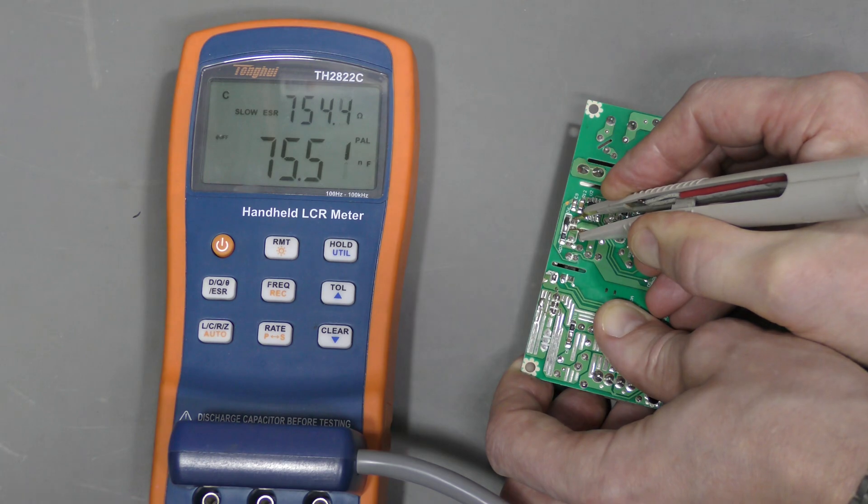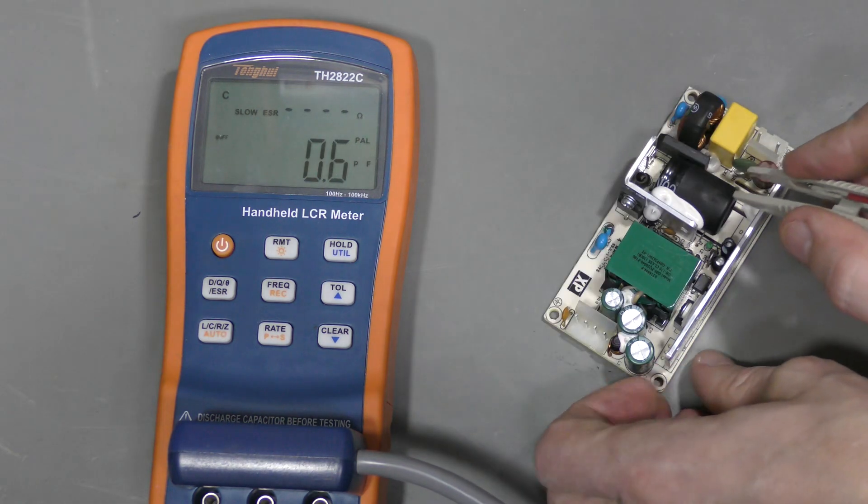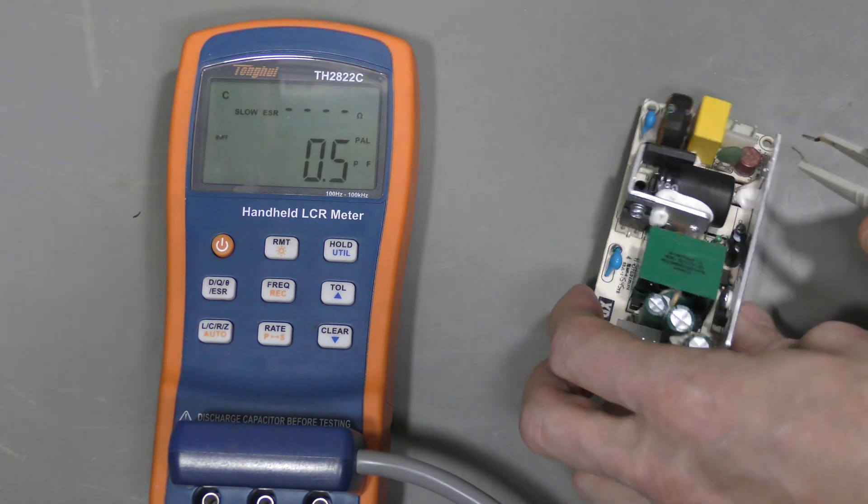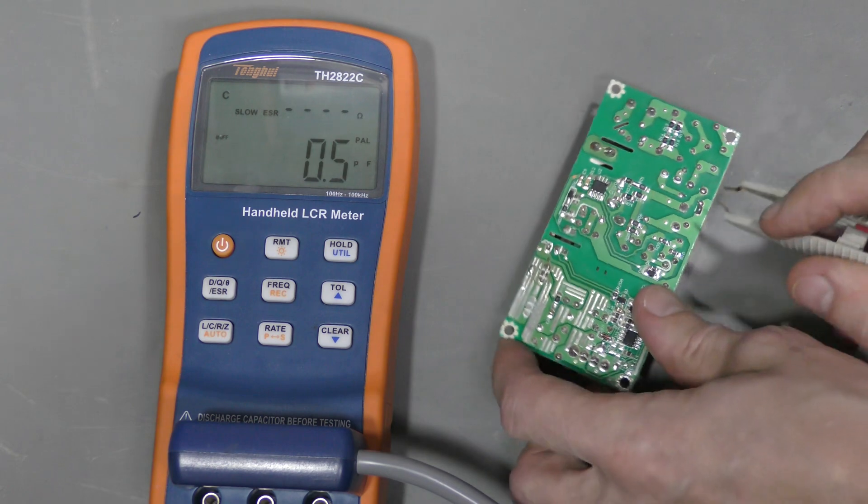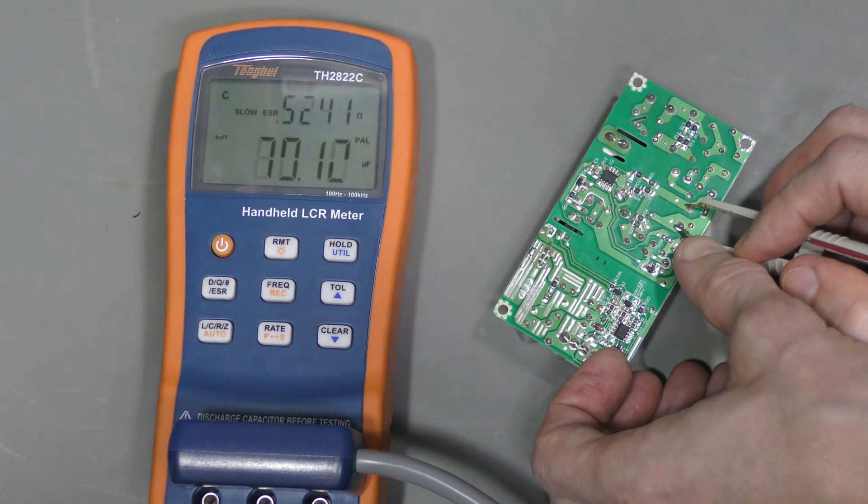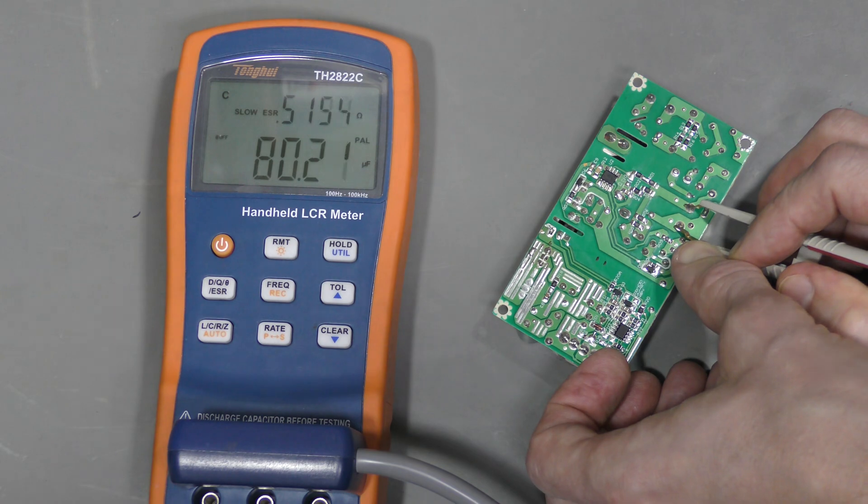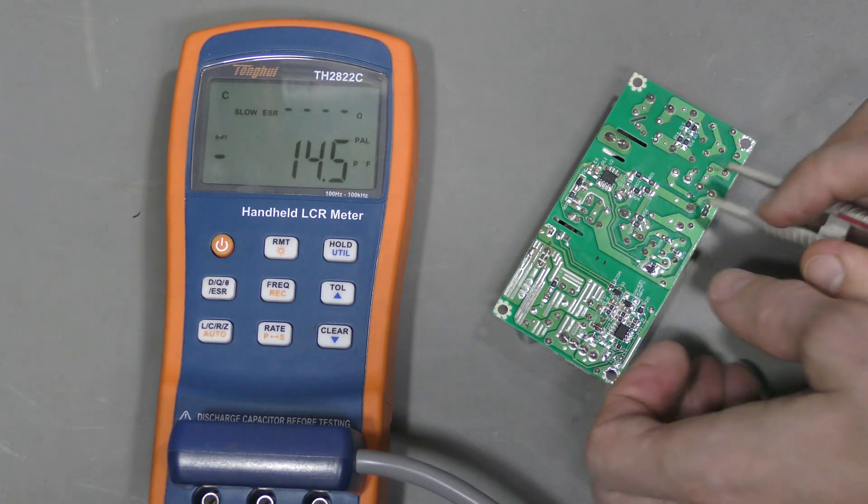This does not look good, does it? And this big cap also has heat shrink on it for some reason. But it looks okay. I don't know its value. We read about 80 microfarads and about 0.5 ohms ESR. Most probably okay.